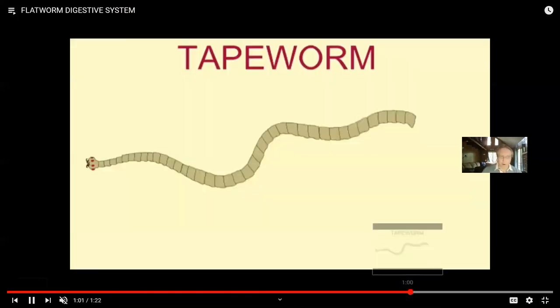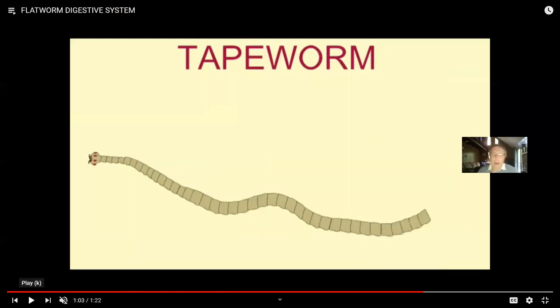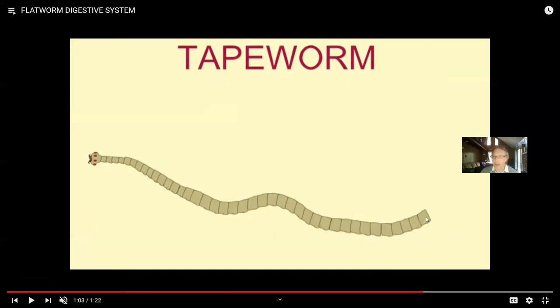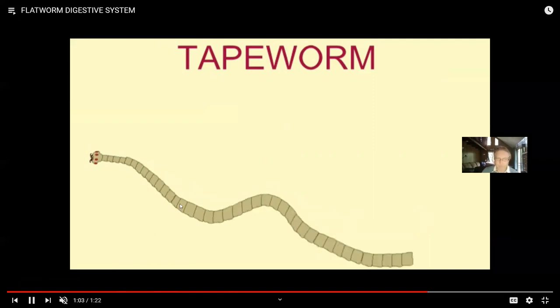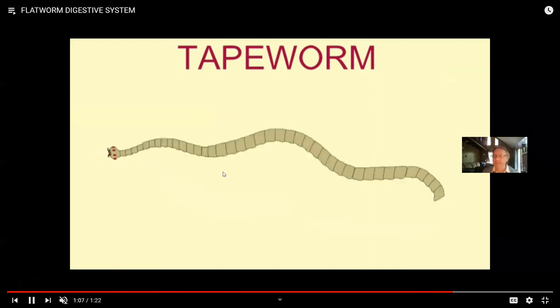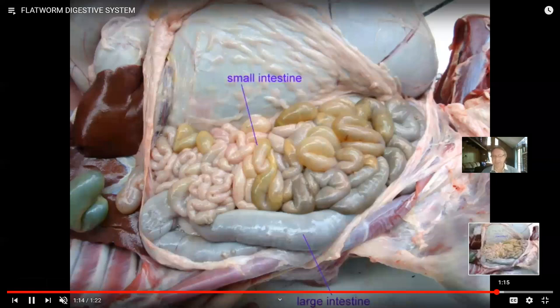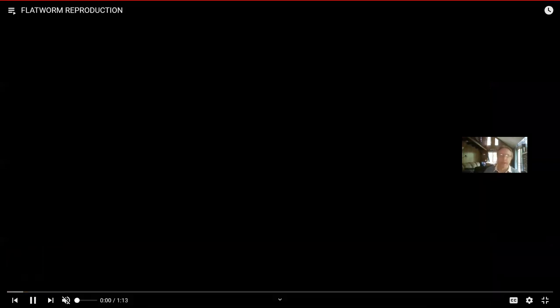There are flatworms — tapeworms and flukes — which have further simplified their digestive system. Because if you're a parasitic organism living in someone's intestines, you don't need to digest food on your own. You simply need to absorb the digested food of your host. So the digestive system of planaria is different from the digestive system in parasitic forms.